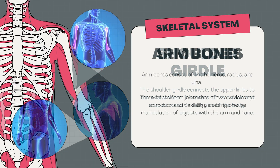In the lower leg, we have the tibia and fibula. The tibia is longer and thicker because it is a weight-bearing bone. The fibula is not a weight-bearing bone; its main function is to provide stability to the ankle joint.